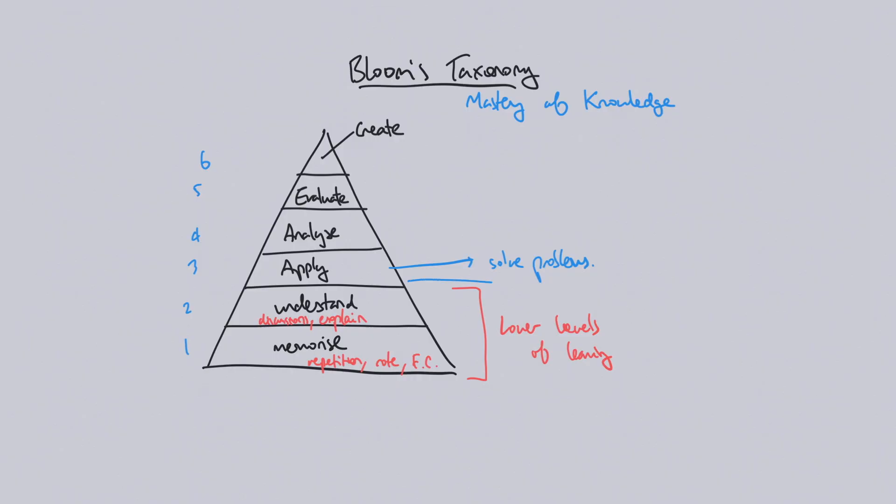Applying is the beginning of what we consider higher-order or higher-level learning. When there is higher-order learning, we are focusing on relationships. It's very difficult to use information to solve a problem without relating it to other components that help solve the problem, or relating it to the nature of the problem, which tends to be multifaceted and complex. So applying information — solving problems with it — is a better step.